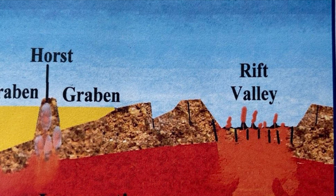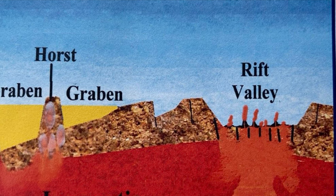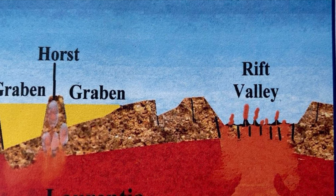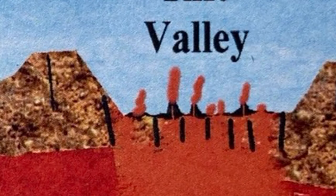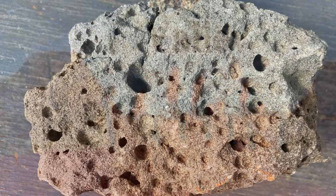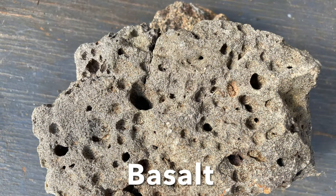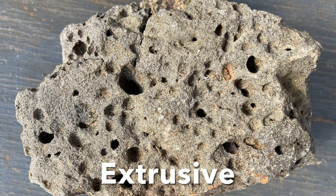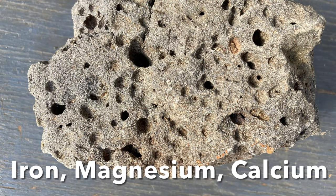The Diabase magma acts as a blowtorch, splitting the supercontinent into pieces and creating a rift valley. Once it creates a rift valley, the Diabase reaches the surface, but then it becomes a different igneous rock. When the Diabase reaches the surface and erupts, it becomes basalt lava. Basalt lava is just the above-ground version of Diabase. It is an igneous rock, but unlike Diabase, basalt is an extrusive rock — that just means it comes out on the surface. Basalt lava, like Diabase, is a mafic rock, meaning it's high in iron, magnesium, and calcium.